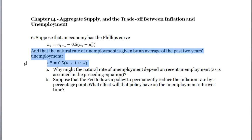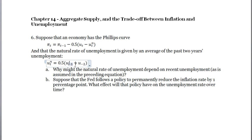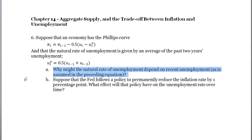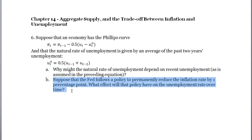But in this problem, the natural rate of unemployment is something that evolves through time. The natural rate at time t is given by the average of the past two years' unemployment rates — the average of yesterday's and the period before's unemployment. Part A asks why the natural rate might depend on recent unemployment as assumed. This is the concept of hysteresis: short-term deviations in output or unemployment can affect long-term natural rate levels.